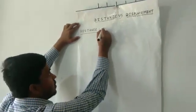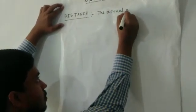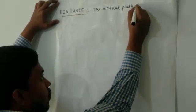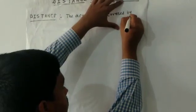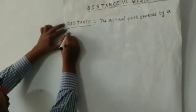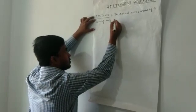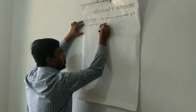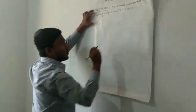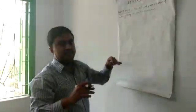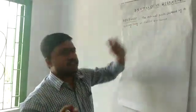Distance means the actual path covered by a moving body is called distance. So first let us write the definition of distance and displacement, and then I can take some examples. From this part we can distinguish between distance and displacement.